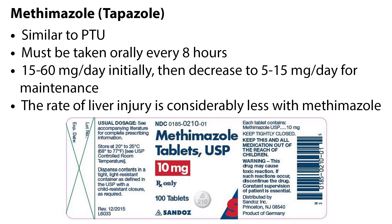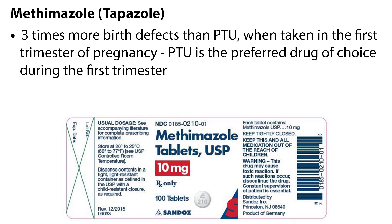PTU should be reserved for patients who cannot tolerate methimazole. Methimazole or Tapazole is similar to PTU and must also be taken orally every 8 hours. The patient is given 15-60 mg per day initially, then it decreases to 5-15 mg per day for maintenance. The rate of liver injury is considerably less with methimazole. However, it has shown 3 times more birth defects than PTU when taken in the first trimester of pregnancy. Therefore, PTU is the preferred drug of choice during the first trimester.